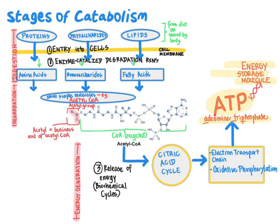To recap what we've learned here, we can break the process of catabolism into three different stages. Number one: digestion — taking complex molecules such as proteins, polysaccharides, and lipids, either from our diet or stored within our body, which enter the cell and are digested through hydrolysis reactions to yield the monomeric units. Those monomeric units then get further degraded in the second stage to yield a set of ubiquitous small molecules, primarily acetyl-CoA, where the acetyl group is the business end used in the citric acid cycle. The third stage — energy generation — includes both the citric acid cycle and electron transport and oxidative phosphorylation to, as the end game of catabolism, provide ATP: a molecule that through the breakage of high energy phosphate bonds generates energy available to drive processes within the cell.